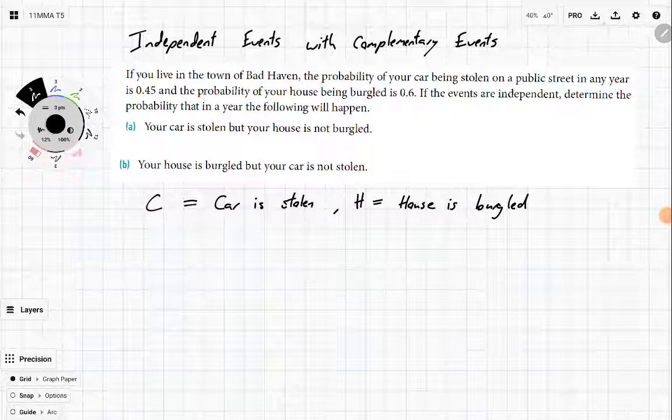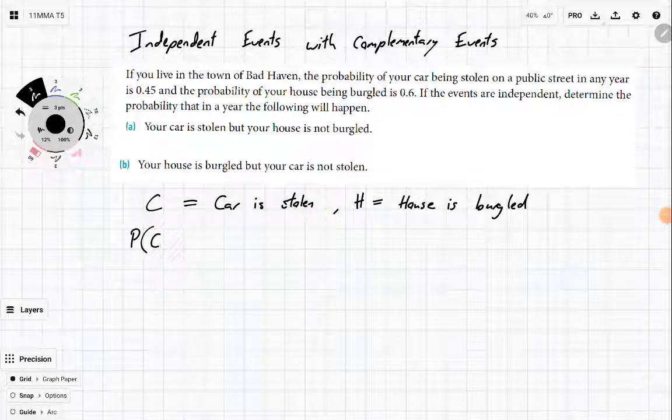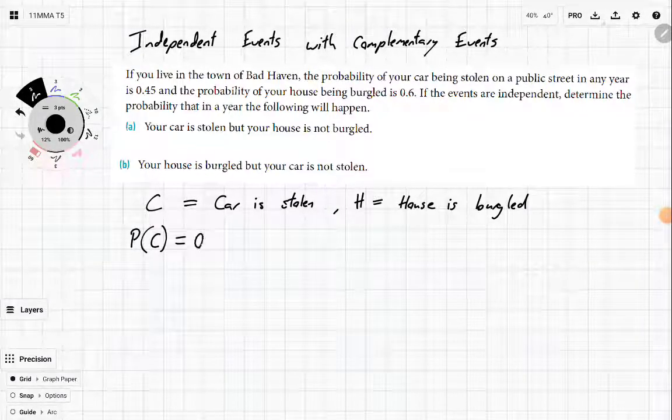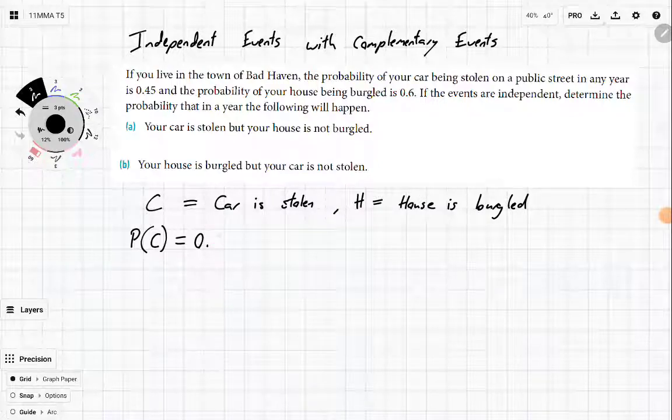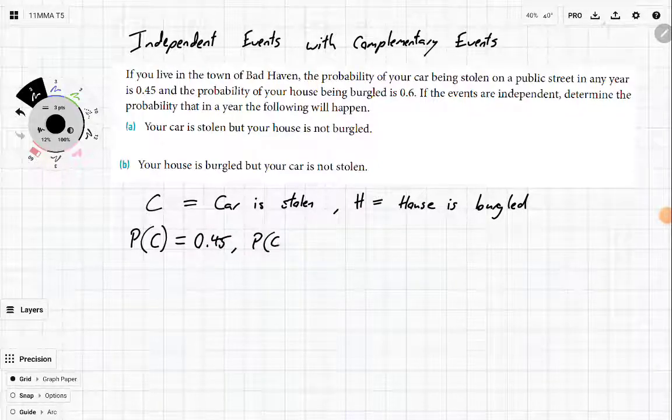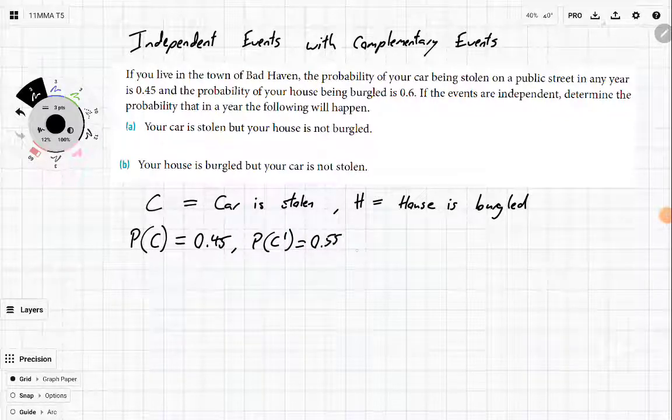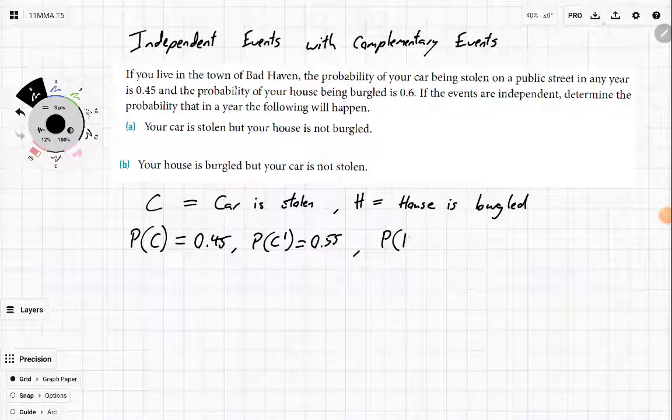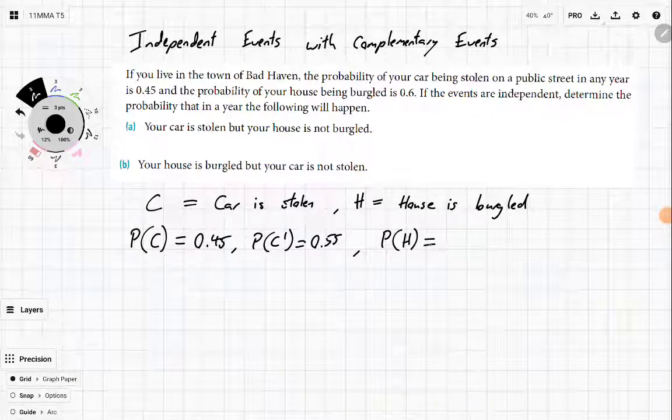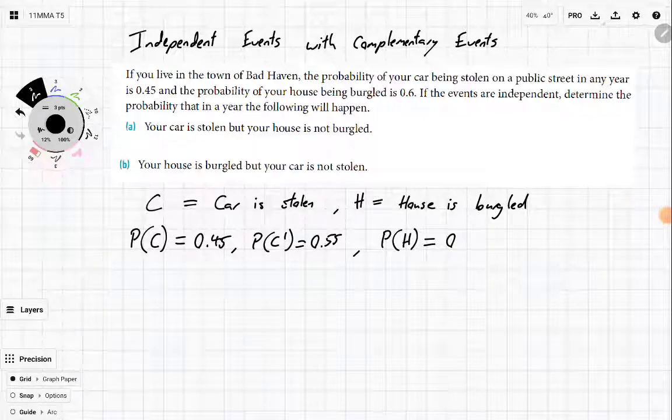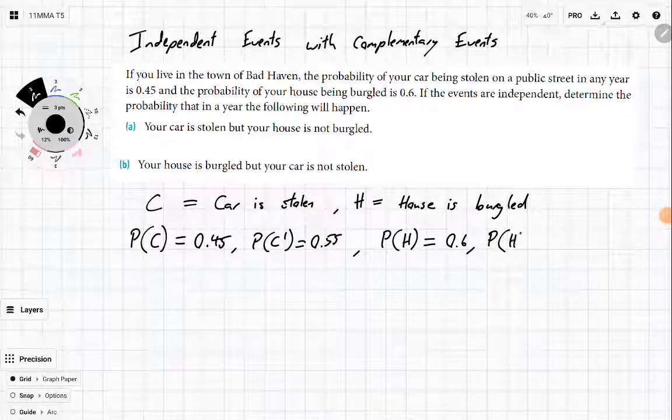Well, let's say C is the event that your car is stolen and H is the event that your house is burgled. The probability that your car is stolen is 0.45, which means that the probability that your car is not stolen would be 0.55, and the probability of your house getting burgled is 0.6, while the probability of your house not being burgled is 0.4.